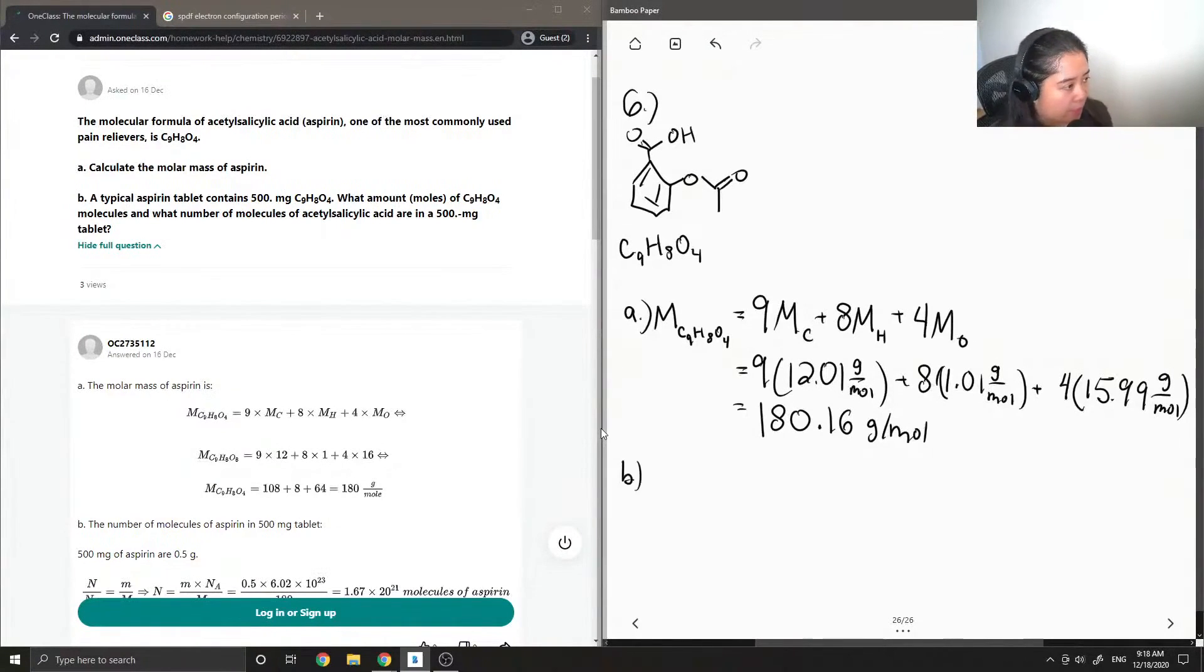So now part B, a typical aspirin tablet contains 500 milligrams of aspirin. So we'll write down the mass, which is 500 milligrams. And they're looking for both the number of moles and then the number of molecules of aspirin.